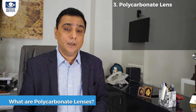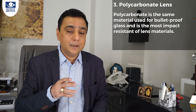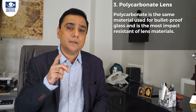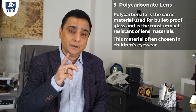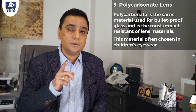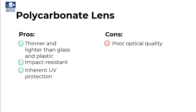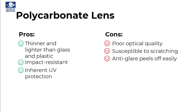The next material is polycarbonate. It is more shatter resistant — it's the same technology used for bulletproof glass in cars — and this is the best material for children's glasses. Pros: thinner and lighter than glass and plastic, highly impact resistant. Cons: poor optical quality, susceptible to scratching, and anti-glare coatings peel off very easily on polycarbonate lenses and do not hold on well.